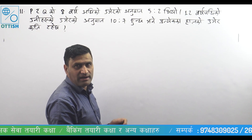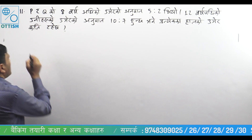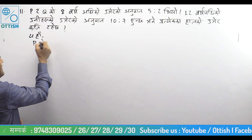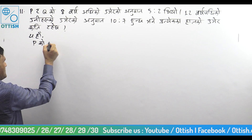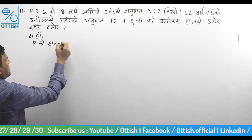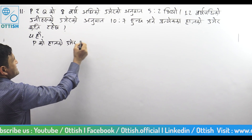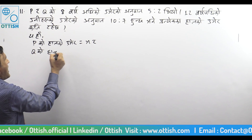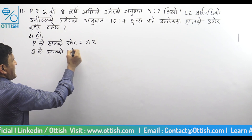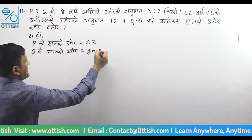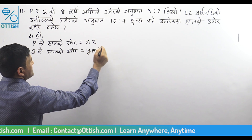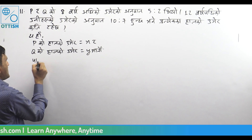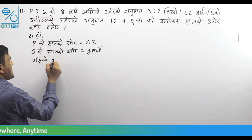Now, if this is P, that is X, and Q, that is Y. P is equal to X, Q is equal to Y, and P is equal to Y.